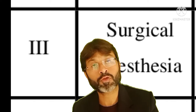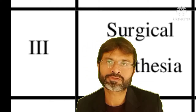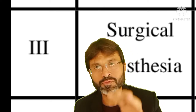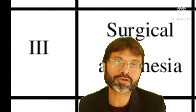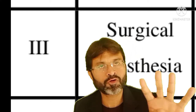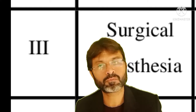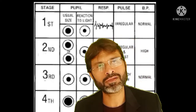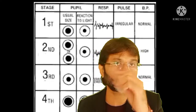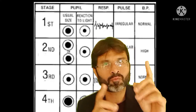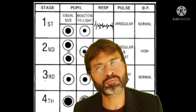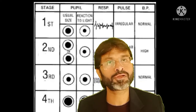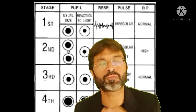Stage 3 is called Surgical Anesthesia. Here the patient has loss of consciousness. This stage is subdivided into four planes: Plane 1, Plane 2, Plane 3, and Plane 4. Plane 1 is characterized by decreased eye movement and pupillary constriction. Plane 2 is characterized by loss of corneal reflexes, and the secretion of tears increases.